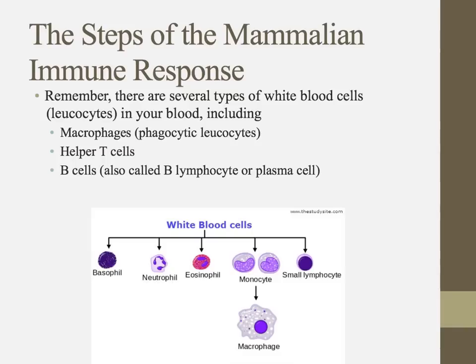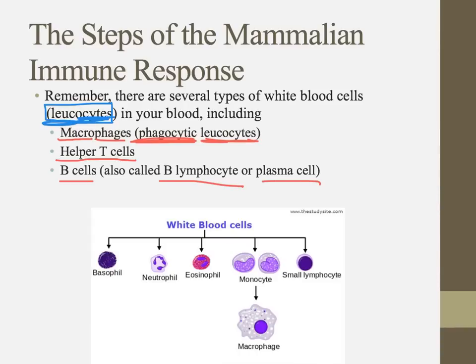Erythrocytes aren't as interesting in terms of immune capability. We're going to look at leukocytes — 'leuco' meaning white, 'cyte' meaning cell — our white blood cells. We'll talk about three main types: macrophages, our big eaters, also called phagocytic leukocytes; helper T cells; and B cells, also known as B lymphocytes or plasma cells.